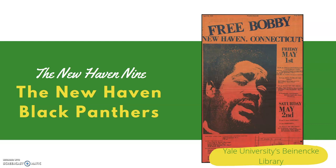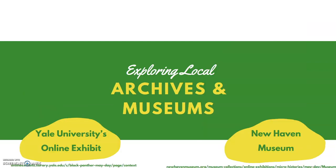When the New Haven 9 were taken into custody, protests erupted across the country, especially on college campuses protesting civil violations and protection of human rights. One such incident turned into violent rioting at Harvard University. As a result, Yale University in New Haven, Connecticut decided to take a different approach. Now I know the basis of my topic and what happened, but where can I go to find sources that might help me understand everything that happened during this point in New Haven's local history?